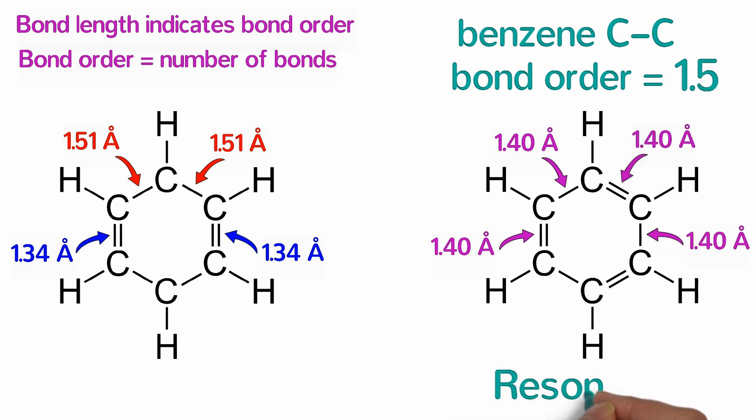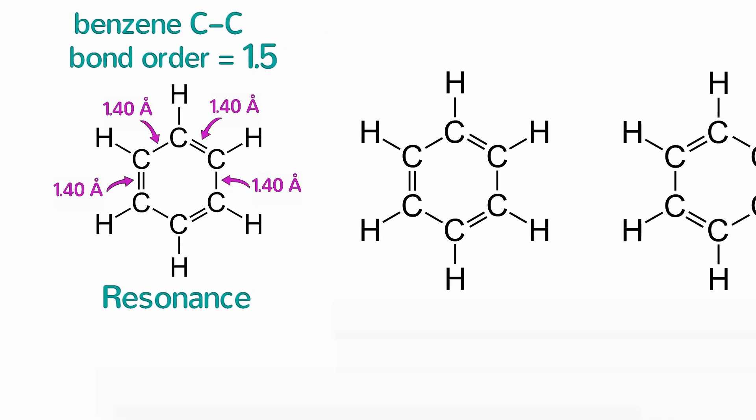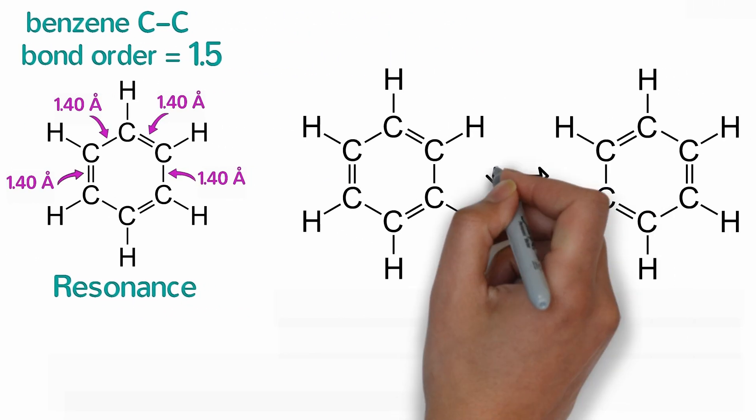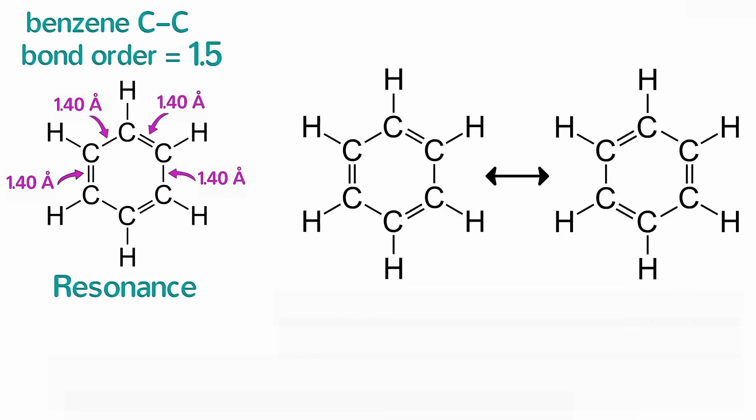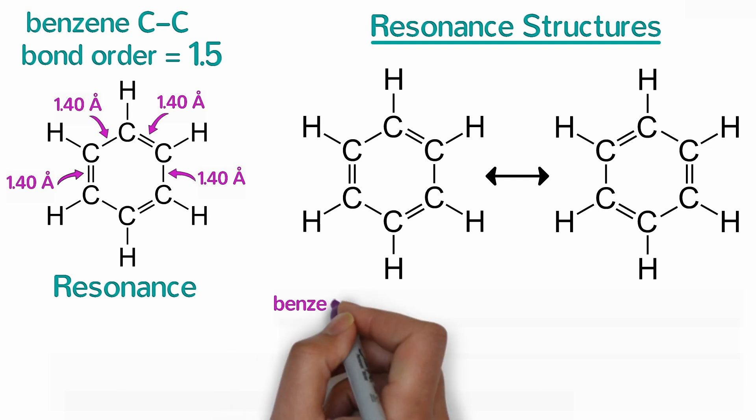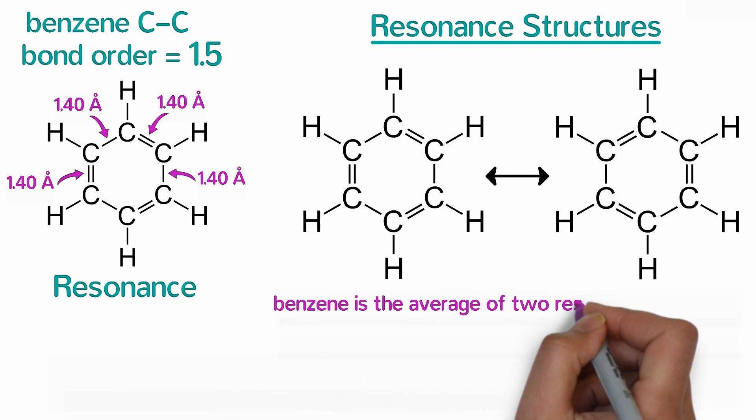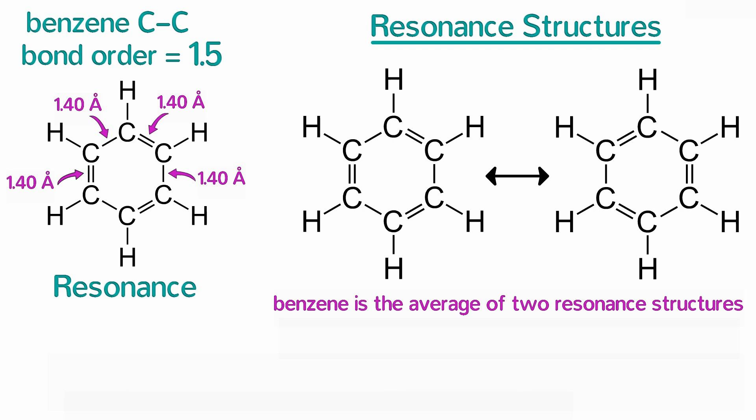In chemistry, we call this phenomenon resonance and we often represent it by drawing two or more Lewis structures with a double-headed arrow between them. Because both of these Lewis structures are contributing to the actual structure, we call them resonance structures. So Kekula's idea that the structure of benzene is the average of two resonance structures is correct.